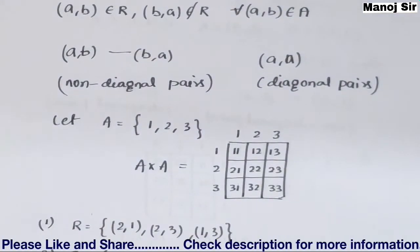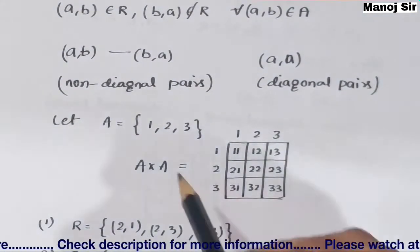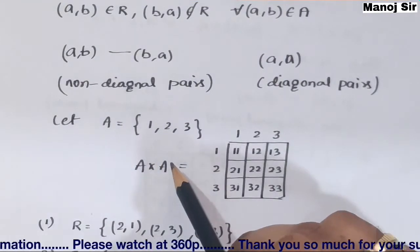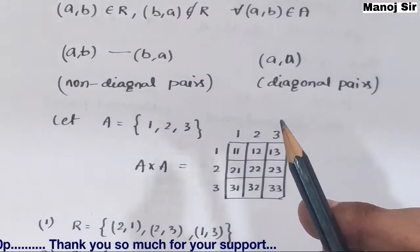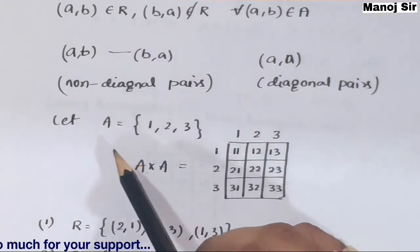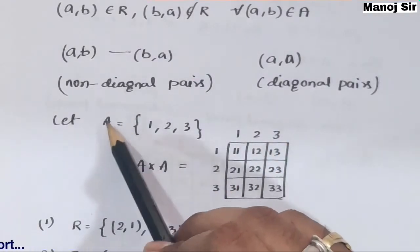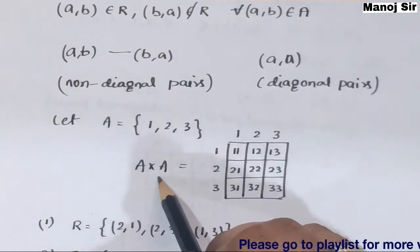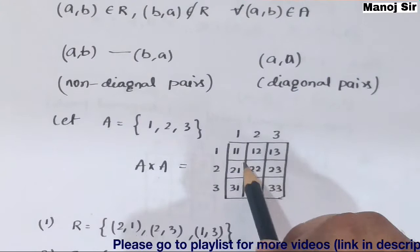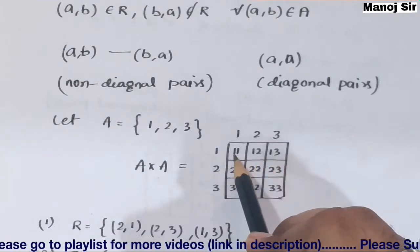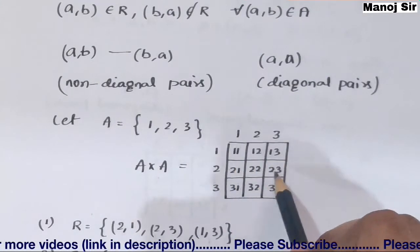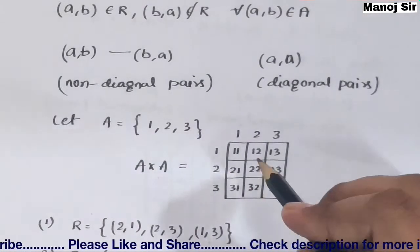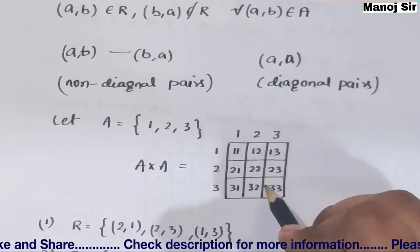Let's take an example. Let set A = {1, 2, 3}. We take the self cross product A × A, which gives us nine pairs: (1,1), (1,2), (1,3), (2,1), (2,2), (2,3), (3,1), (3,2), (3,3). Out of these nine pairs, three are diagonal pairs.